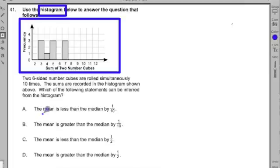Then it has these questions. The mean is less than the median by one-tenth. The mean is greater than the median by one-tenth. The mean is less than by one-half. The mean is greater than the median by one-half.